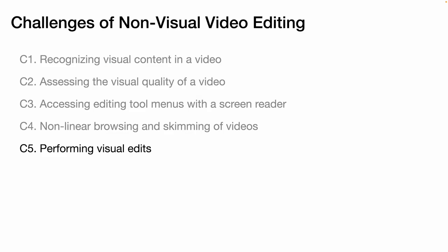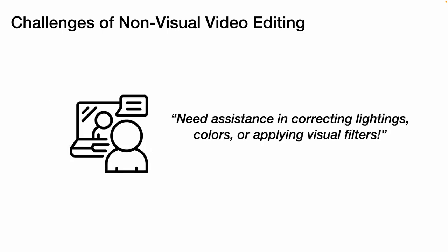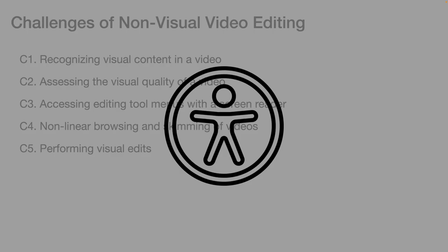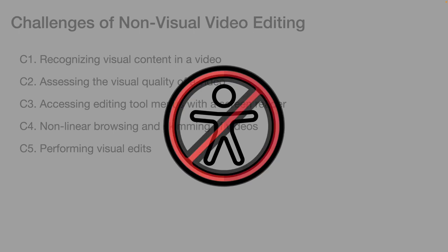Finally, it is difficult to perform visual edits, such as color correction or adjusting lighting, so creators with visual impairments often ask for help with this type of edits. All of these challenges make non-visual video editing inefficient, making it hard for video creators with visual impairments to drive different filming styles or to become independent.